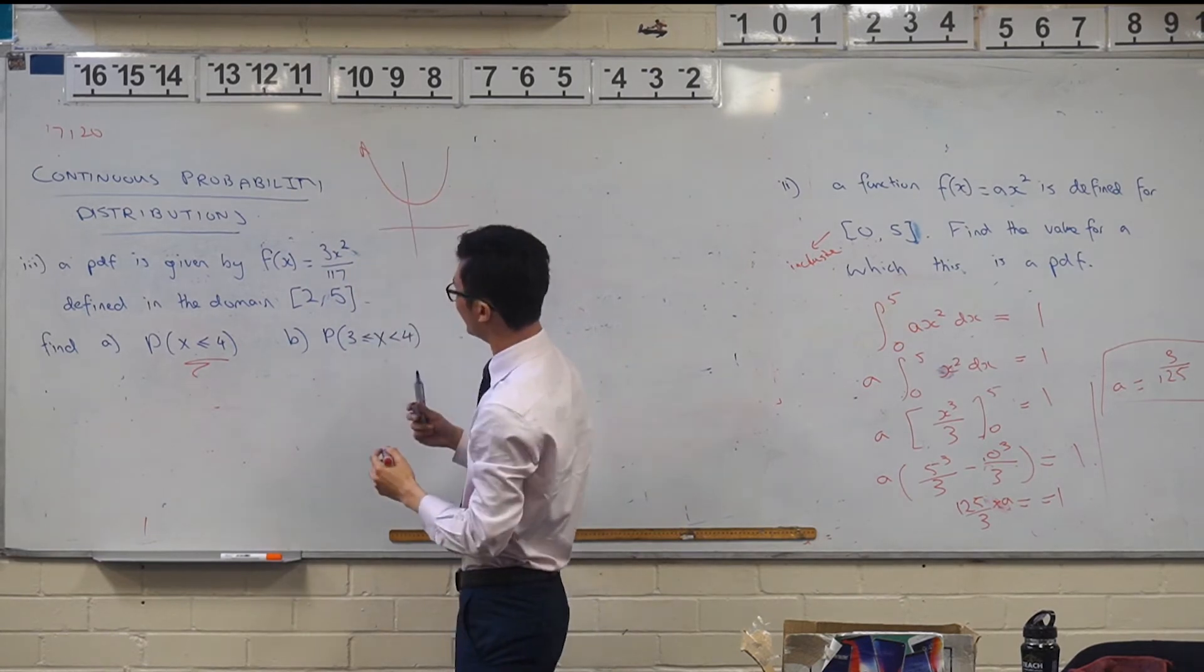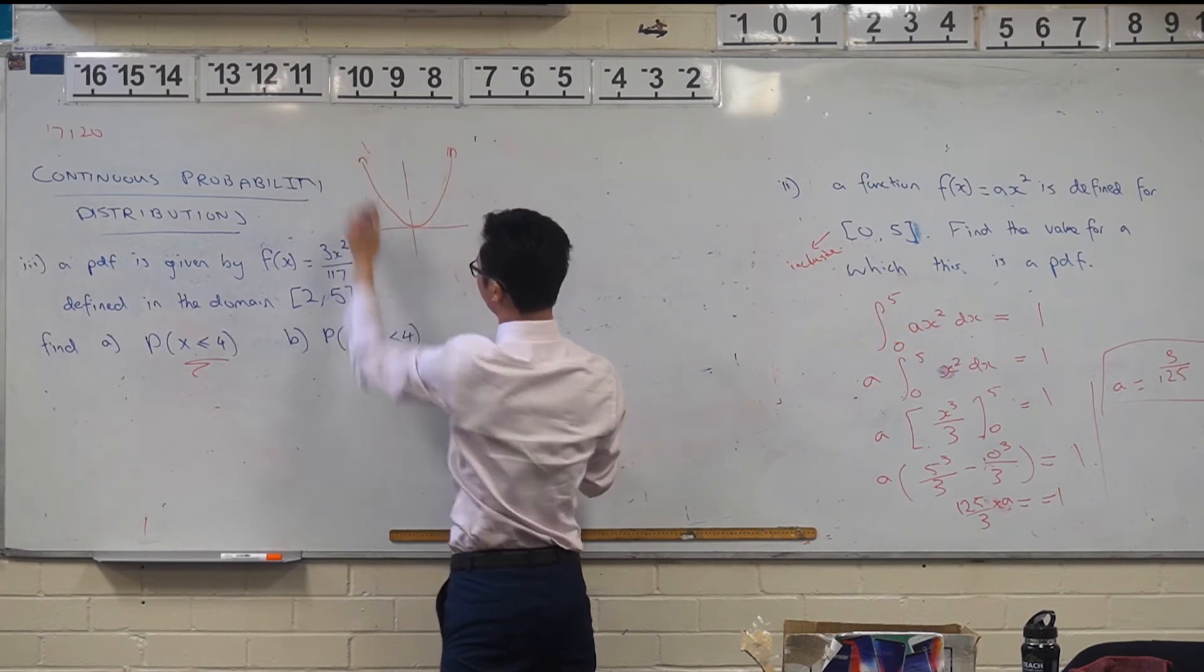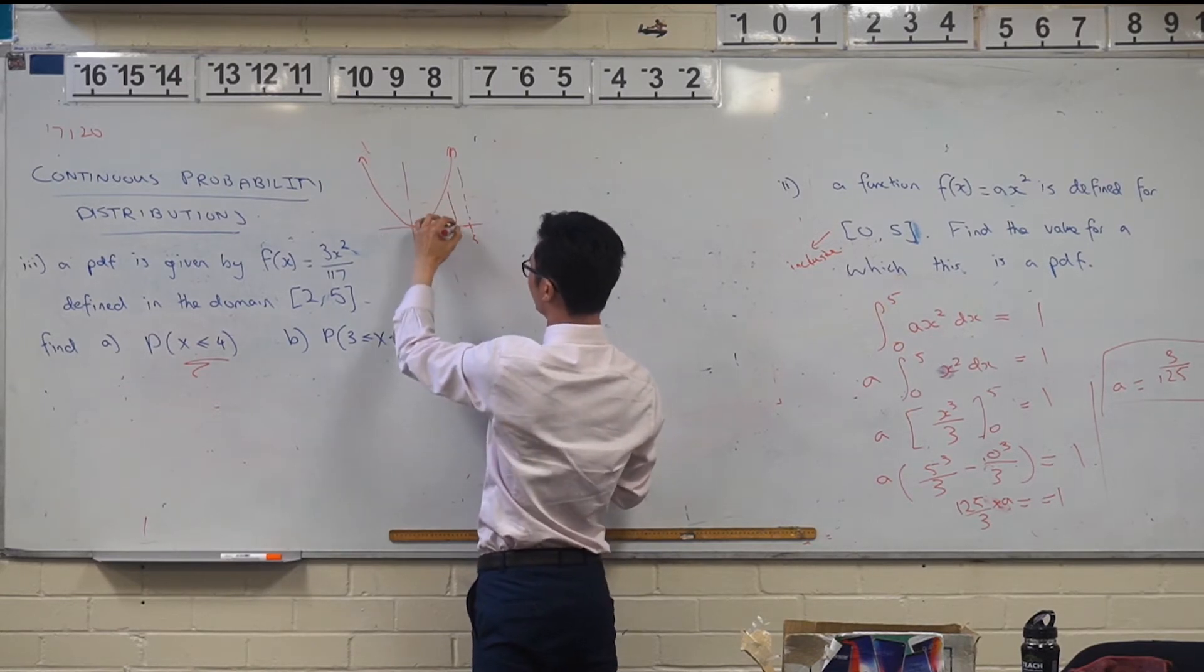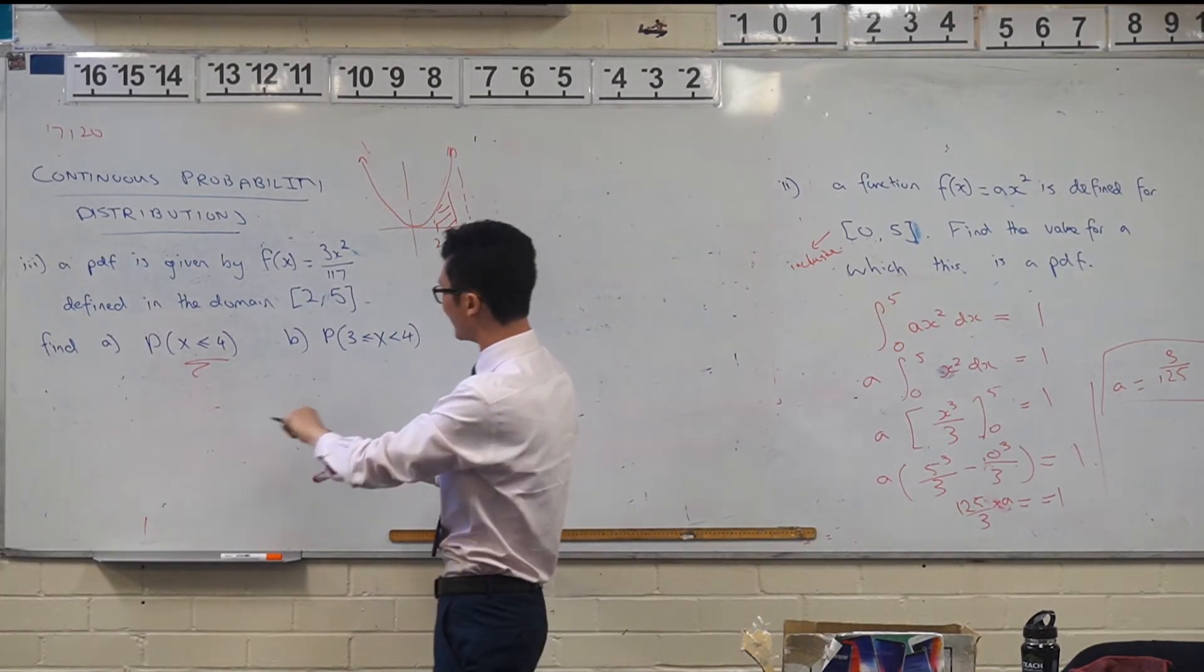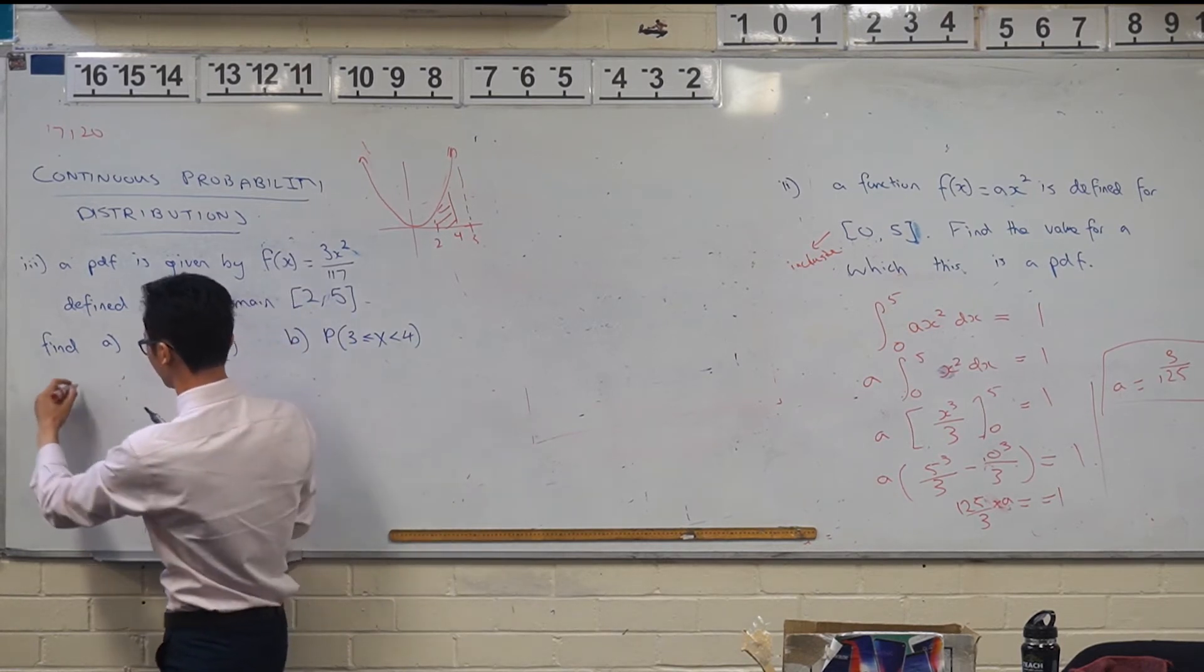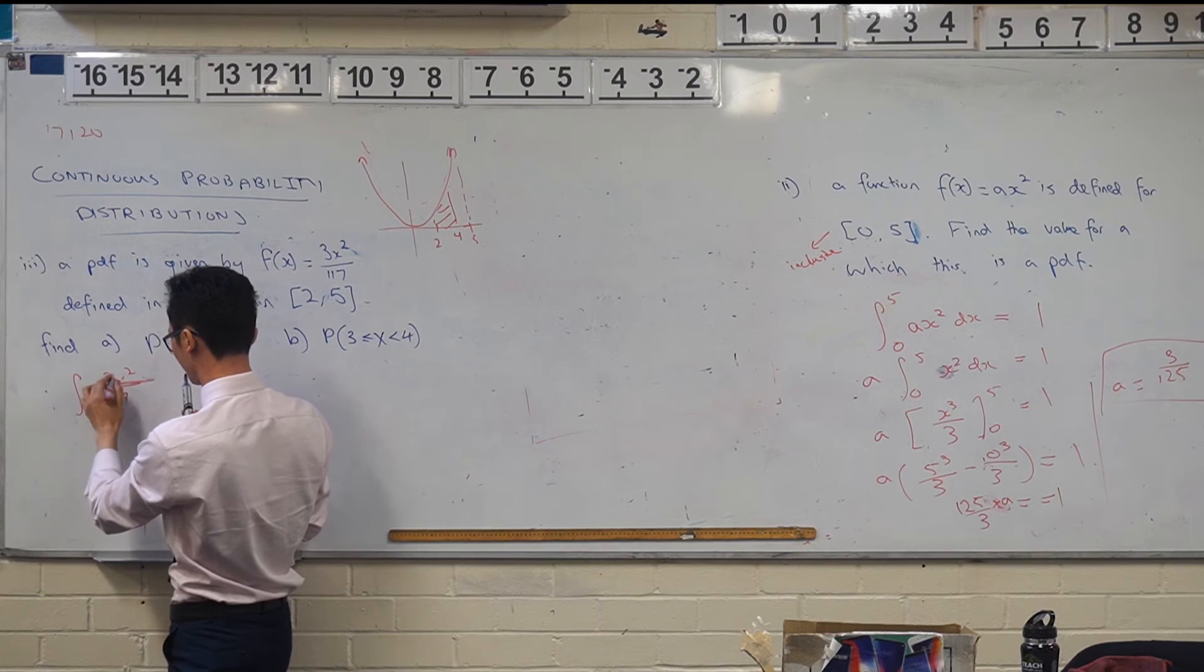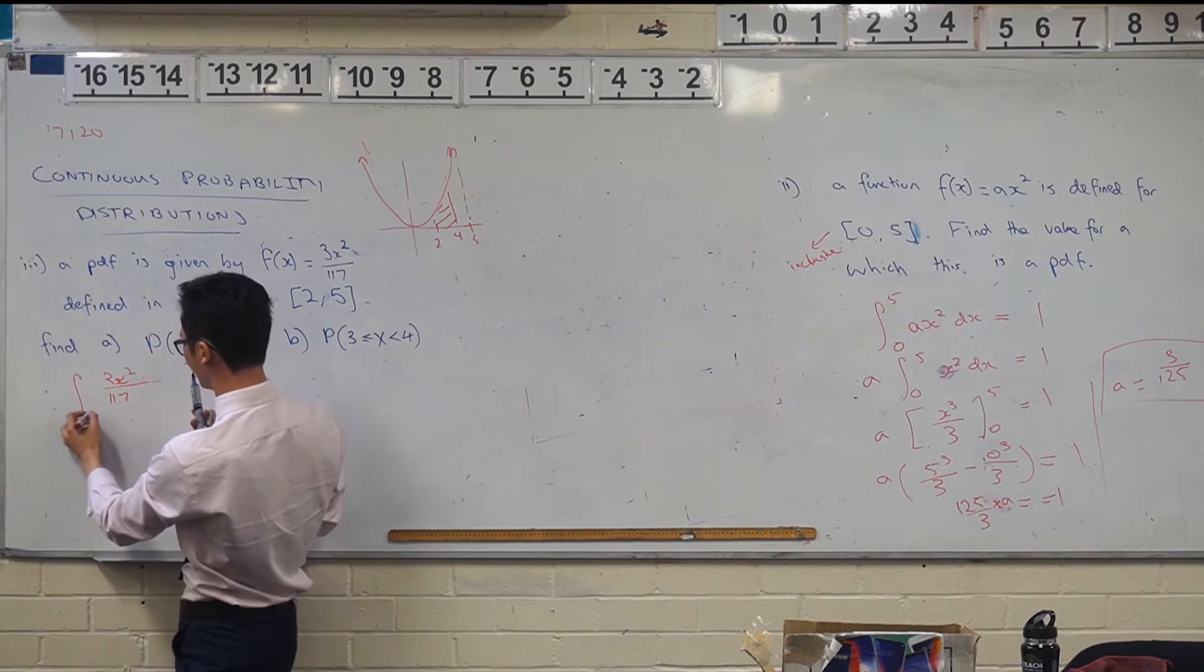And so if you think about the curve, what does this look like? This is going to be like some kind of parabola. It should be going through the origin actually. So when you're saying what's the probability that's going to be less than or equal to four, because it's only defined from two to five, it's two to four. That's right. It's two to four. Mind blown. So let's set it up. So we're saying that our integral is going to be three X squared on 117 from two to four, as Meilin said.